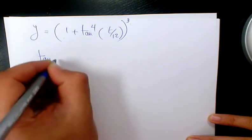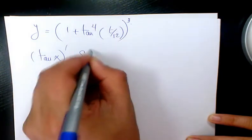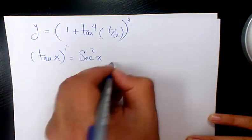You have tan x, when you want to find out the derivative, the derivative of tan x is going to be secant squared x.